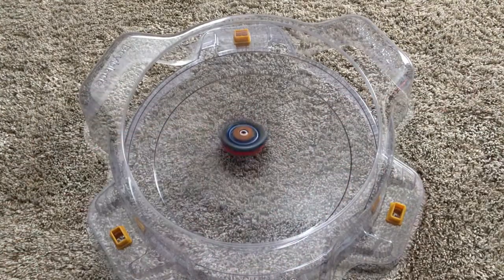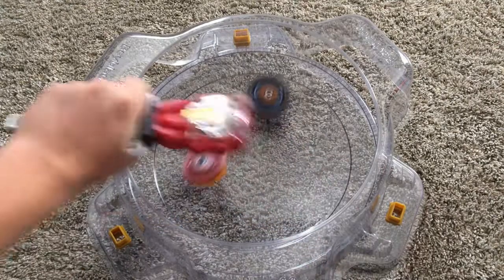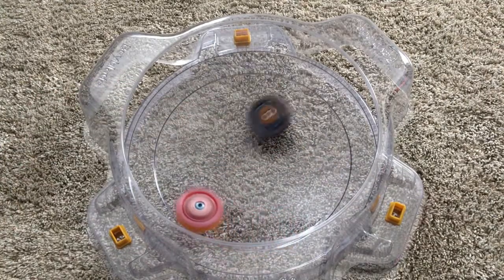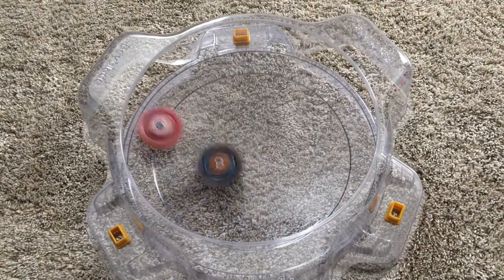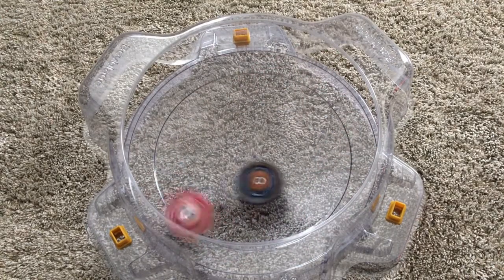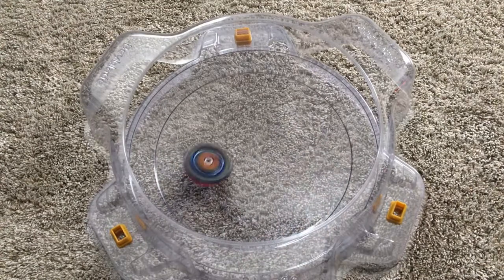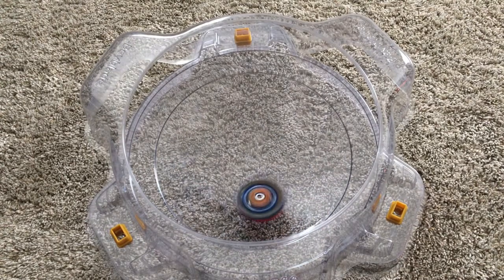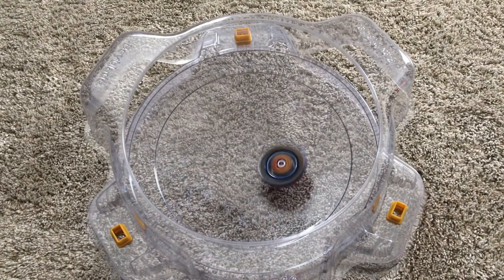Round 4. Let it rip. Some pretty heavy attacks from both beyblades. Hyperion is trying to take the flower pattern, but is now ricocheting off the walls. Valkyrie is taking more of a center approach. Oh, and a huge attack leads to a knockout. The score is 3-1.